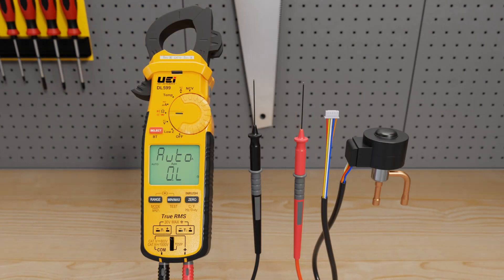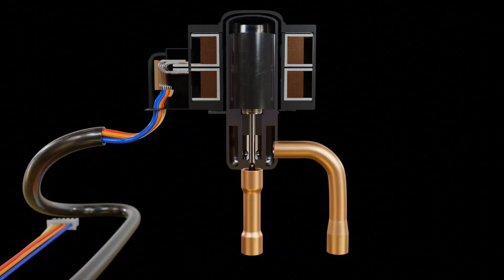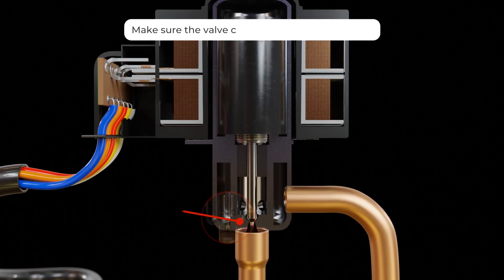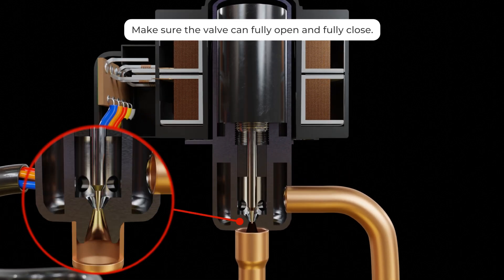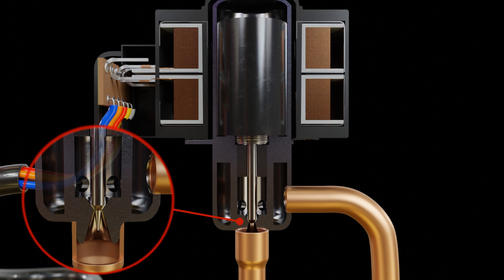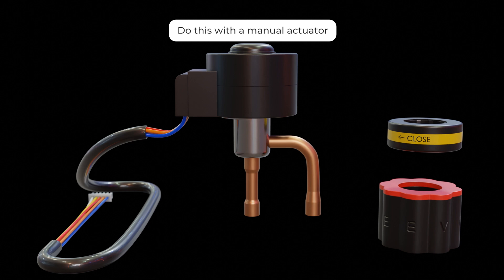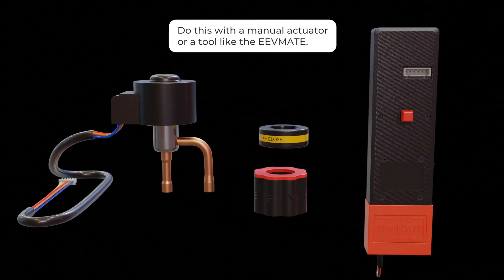When you've ruled out electrical problems, you can see if the valve is stuck from a mechanical issue. The way to do this is to make sure the valve can fully open and fully close. You can do this using a hand-powered cylindrical tool with magnets called a manual actuator or tool like the EEV Mate.